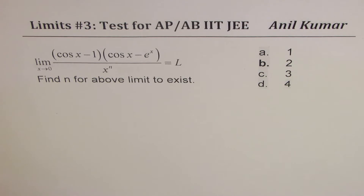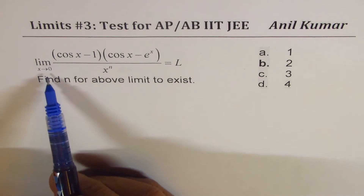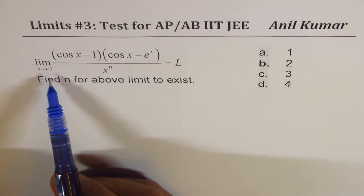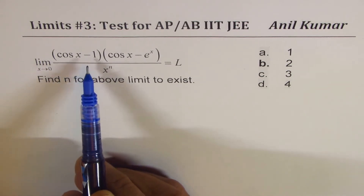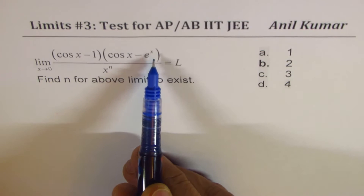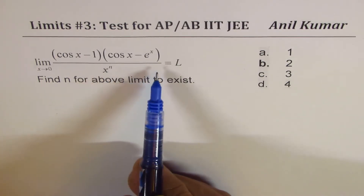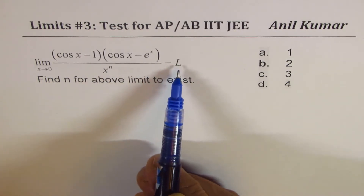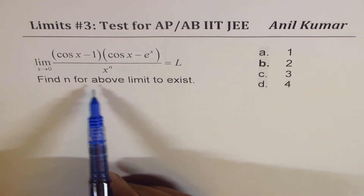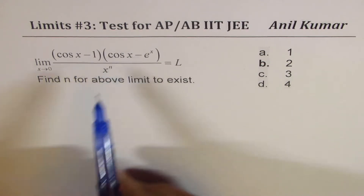One of the examples is a multiple choice question. You need to find the limit as x approaches 0 for cos x minus 1 times cos x minus e to the power of x, over x to the power of n, equals L. Find n for the above limit to exist.